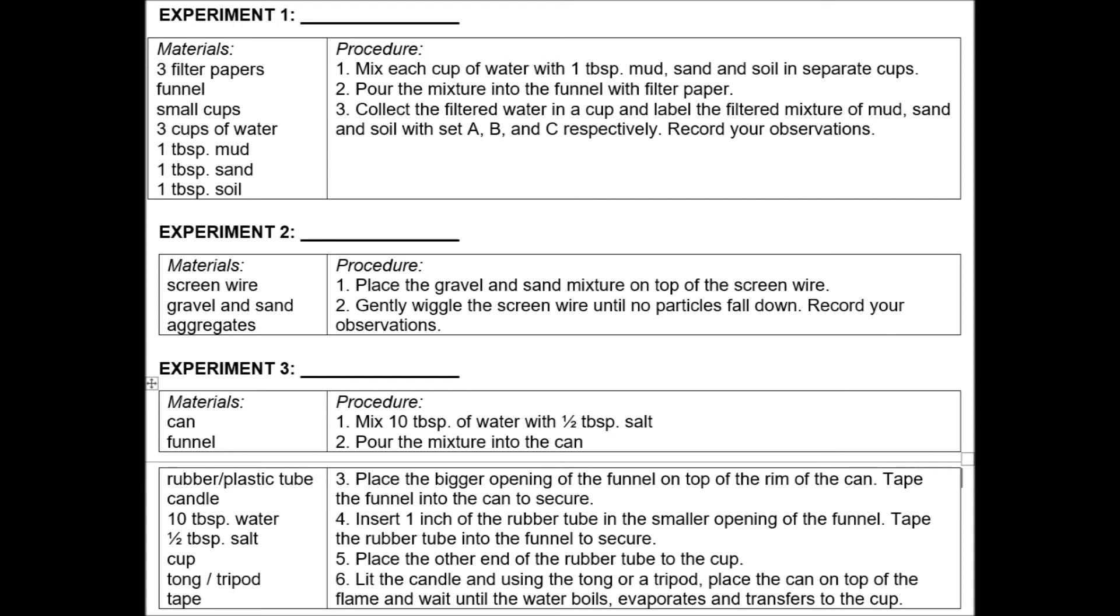Experiment two. So what will we use here? Place the gravel and sand mixture on top of the screen wire. Gently wiggle the screen wire until no particles fall down. Record your observation. So what is it? We used a screen wire. We have gravel and sand. And then in the procedure, we wiggle it. So that is mechanical separation. What I mentioned earlier that is done at construction sites by construction workers. They mechanically separate the mixture.